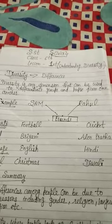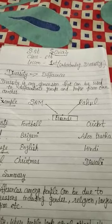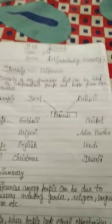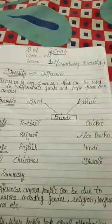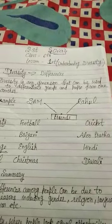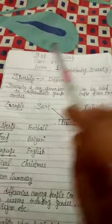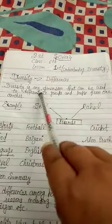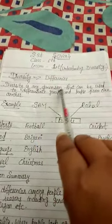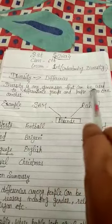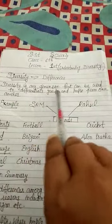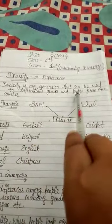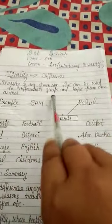We speak different languages, we eat different kind of food, celebrate different kind of festivals. Diversity is any dimension that can be used to differentiate groups and people from one another.